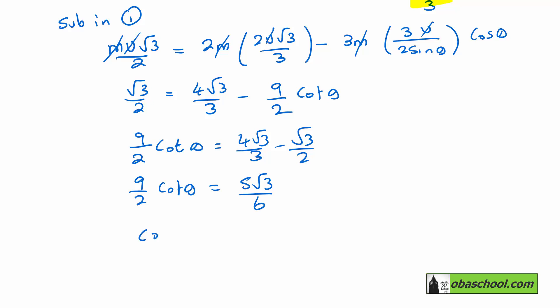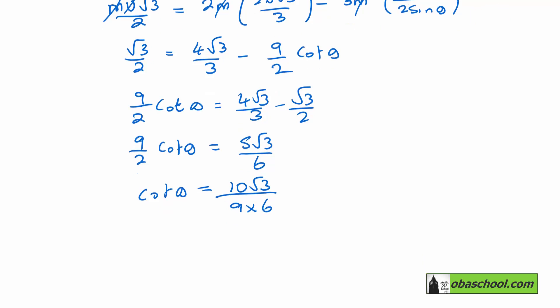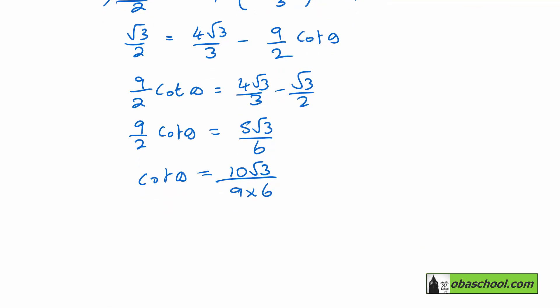So cot theta is going to be 10 root 3 over 9 times 6. And we can simplify that into 5 root 3 over 27. Which means that tan theta is 27 over 5 root 3. And at that point we can calculate and we get theta is 72.2 degrees.